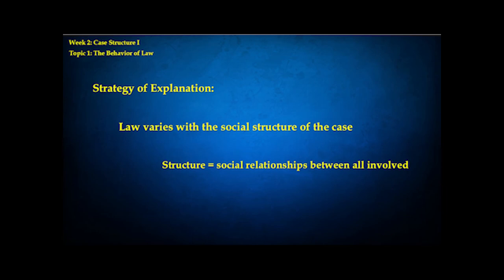Each case has a social structure defined by the social relationships between everybody involved — whether they're intimates or strangers, members of the same cultural group or of different cultural groups, whether they're social equals or from different class backgrounds. These variables make the social structure of the case, and different case structures attract different quantities of law. The pattern of relationships between everybody involved affects how likely the case is to attract a high or low quantity of law.